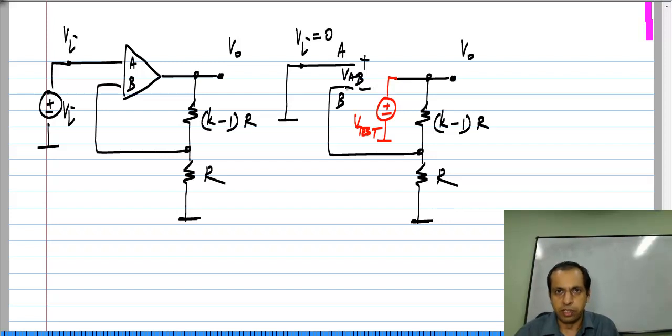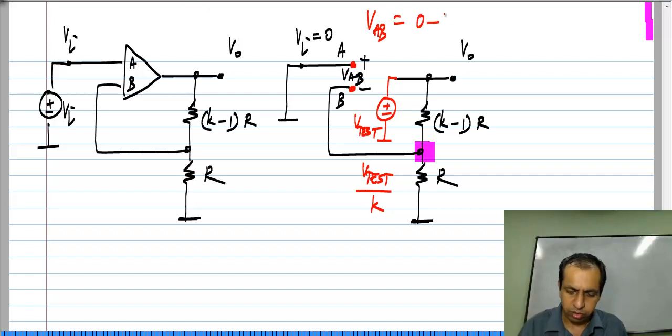Now, this is an extremely trivial circuit. So, if I have V test driving this point, at this point I will have a fraction of V test which is V test divided by K. This V A B is 0 minus V test by K, which is minus 1 by K times V test.